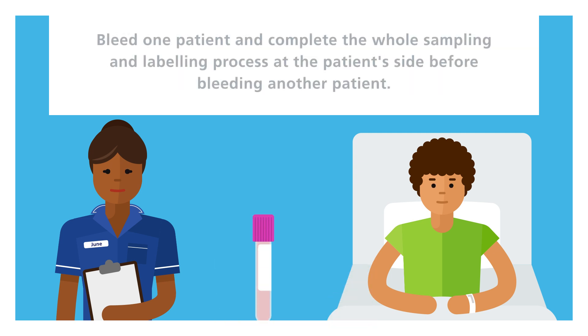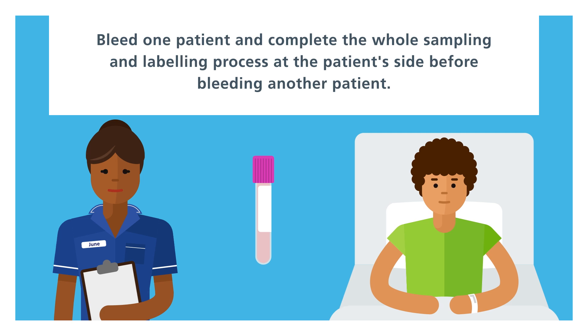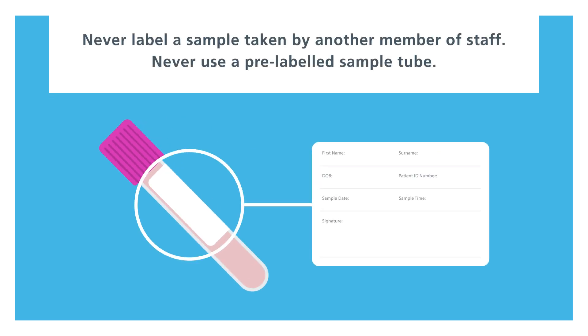Bleed one patient and complete the whole sampling and labelling process at the patient's side before bleeding another patient. Never label a sample taken by another member of staff. Never use a pre-labeled sample tube.